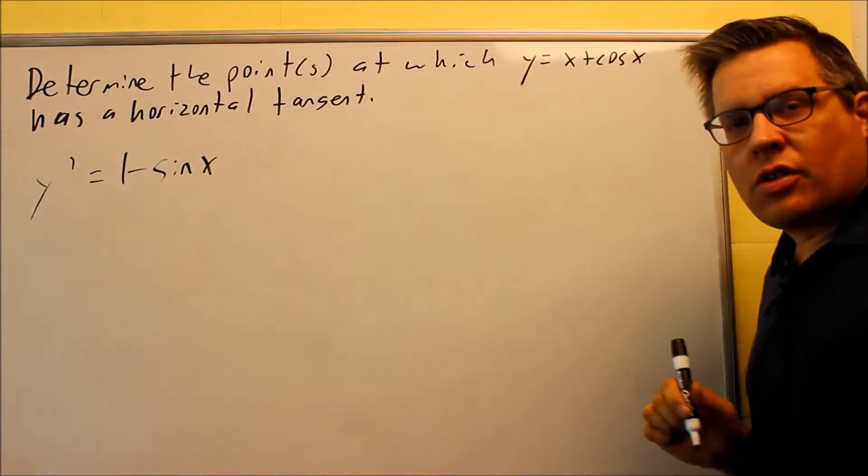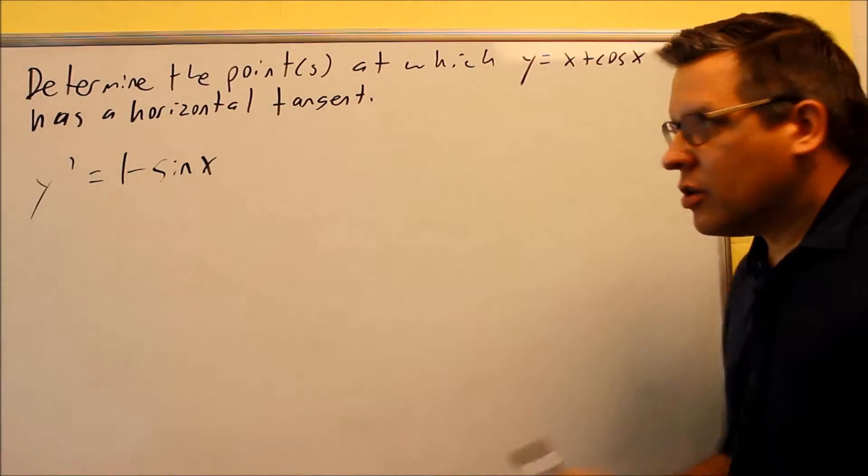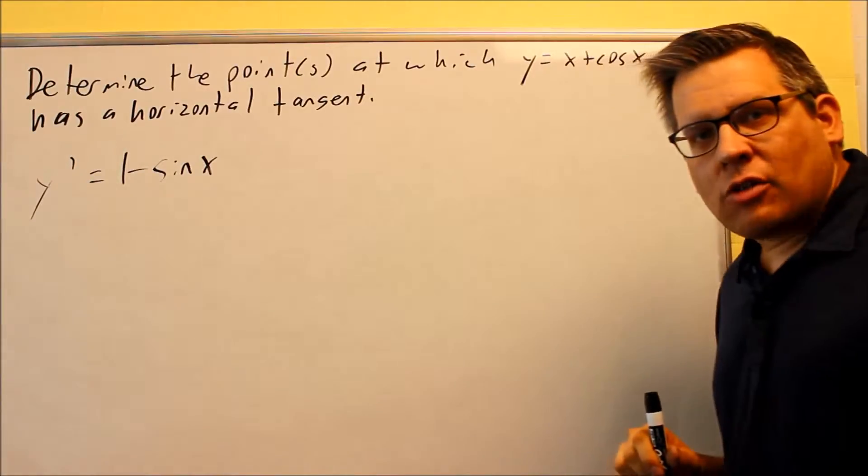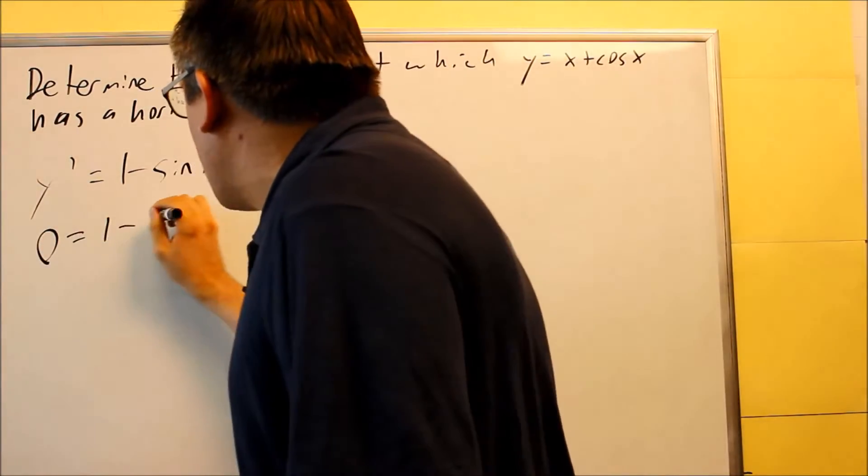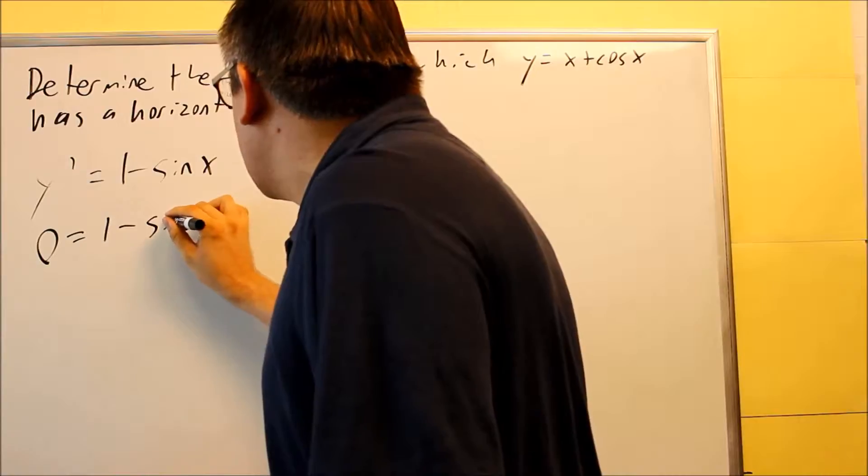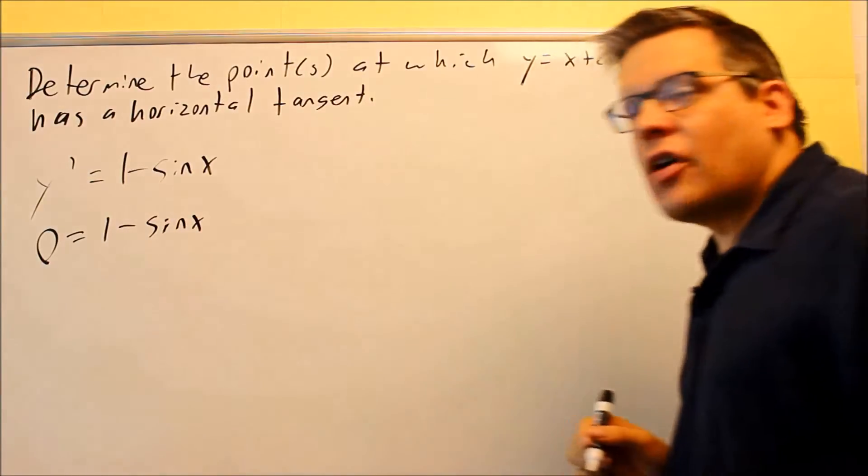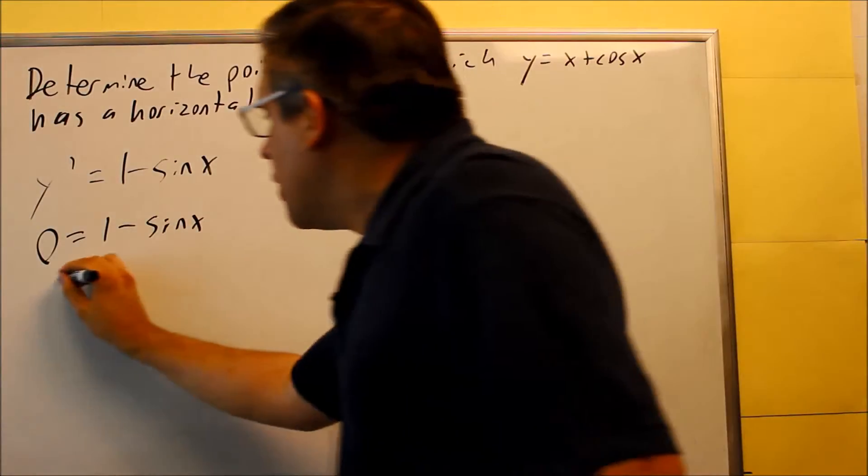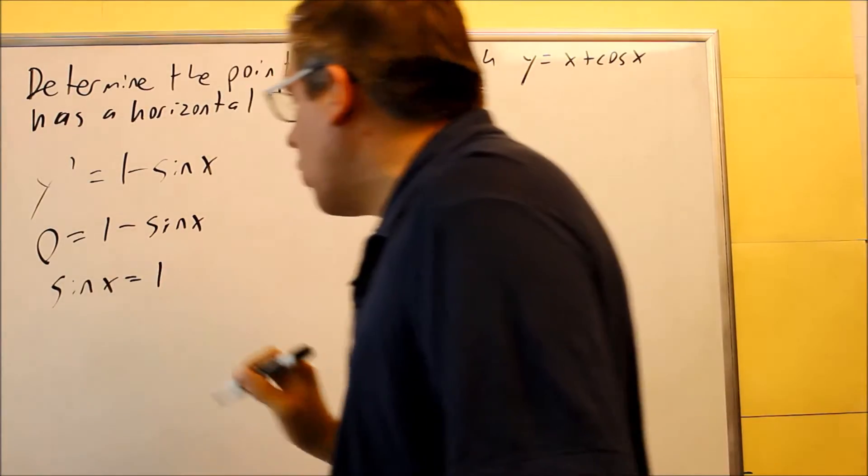A horizontal tangent means the slope has to be zero, so the derivative equals zero. We set 0 = 1 - sin x and solve for sine, getting sin x = 1.